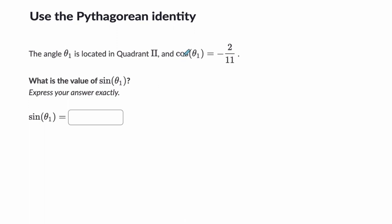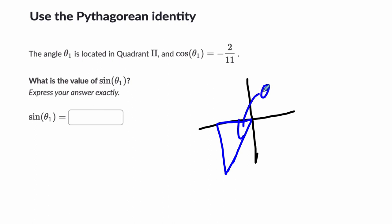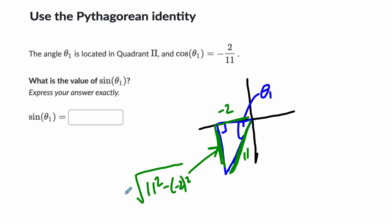Let's do one more. In this last example, we want a second quadrant angle. There it is — we draw a triangle around the angle. Here's theta sub 1, here's my right angle. The cosine is negative 2 over 11, so my adjacent side is negative 2 and the hypotenuse is 11. I want to know the other side — that's the hypotenuse squared minus the leg squared, then square rooted. We want the negative root because we're pointing down and sine is negative in the third quadrant. That gives us negative square root of 117. The sine is the opposite side, negative square root of 117, over the hypotenuse, 11.